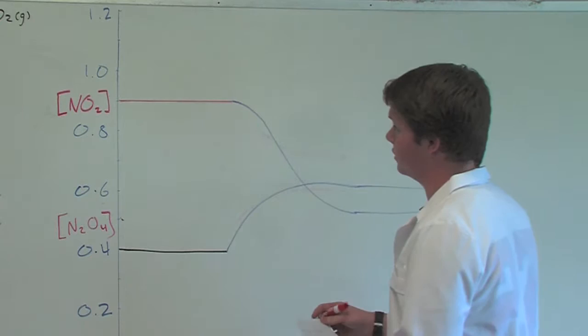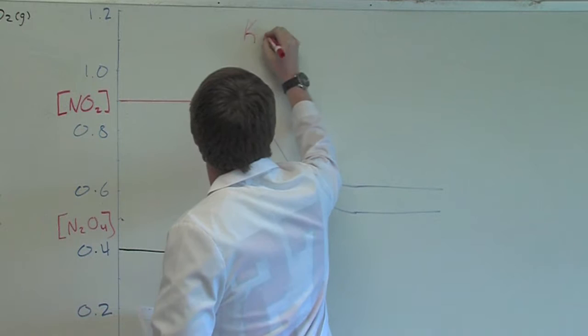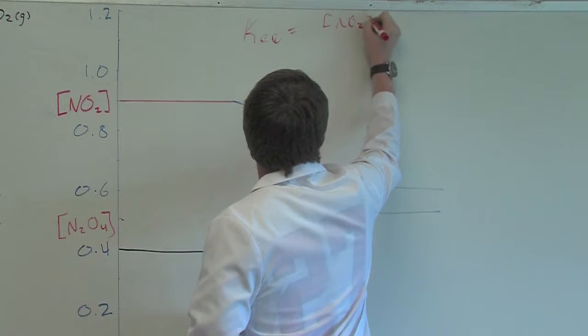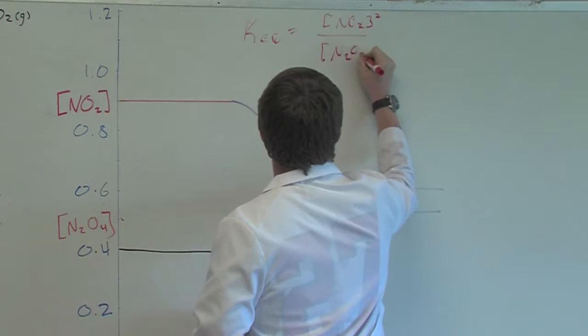To confirm the equilibrium constant, the equation would be KEQ equals the concentration of NO2 squared, because the coefficient is 2, over N2O4.